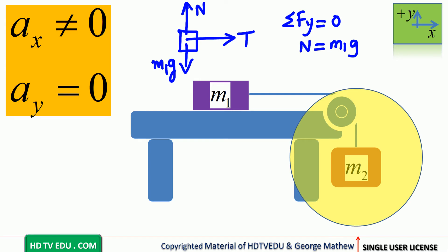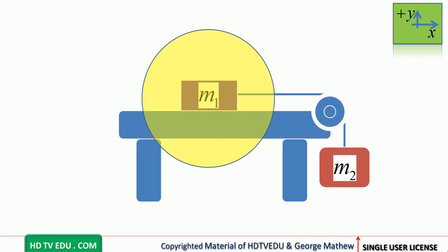Along the horizontal, net force equals mass M1 times its acceleration A. The only force to the right is tension, so T equals M1 times A. Now, let us close M1 and look at mass M2.